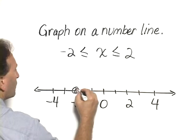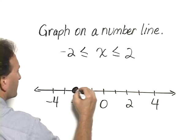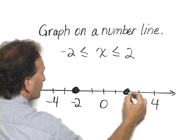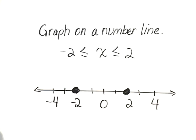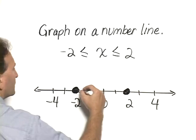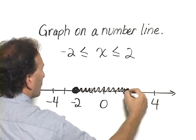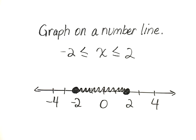We use a closed, or filled-in, circle at negative 2 and positive 2, and then we shade in what's between them.